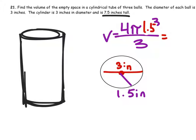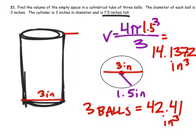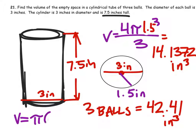Very good. So the volume of one ball, that would be the volume of one ball. If we wanted three of these balls, then we just multiply that by 3, and we get 42.41 inches cubed. Now let's look at the volume of the cylinder, which has a diameter of 3 inches, and the height is 7.5 inches, like this, right here. So the volume of the cylinder is pi times the radius squared, which is still 1.5 squared, times the height, 7.5.